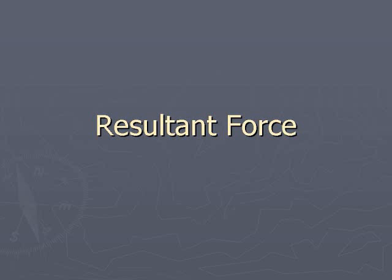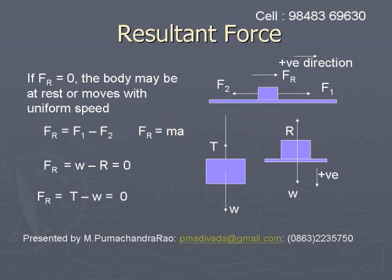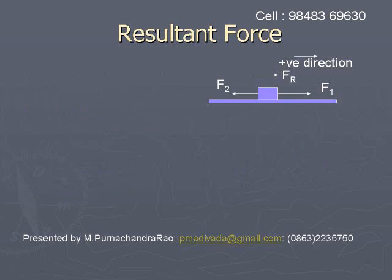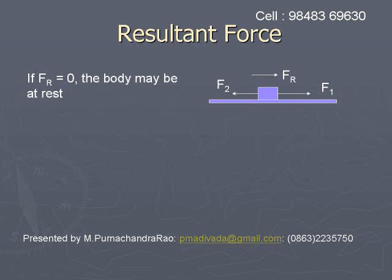To understand the concept of resultant force, let us see the upper figure in which F1 and F2 are two forces acting on a block placed on a smooth surface. If the block is at rest, then the resultant force will be zero. So F_r will be zero if the body is at rest or moves with uniform speed.